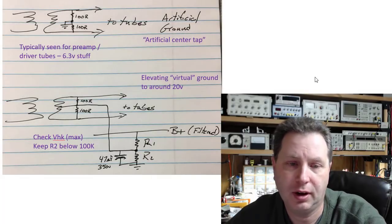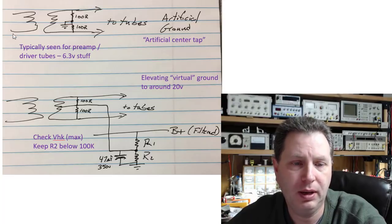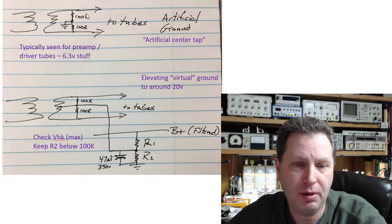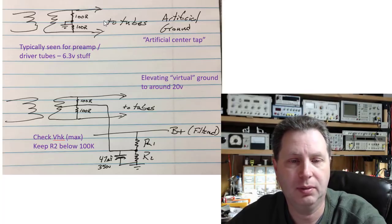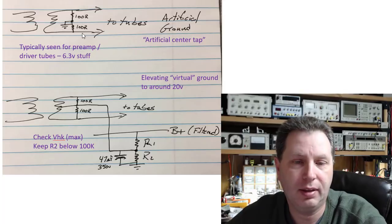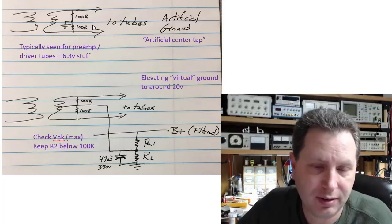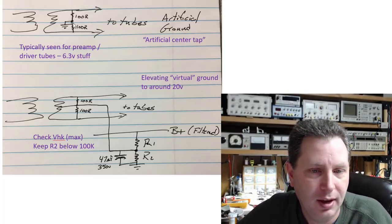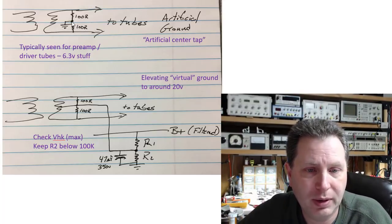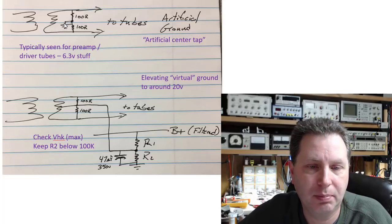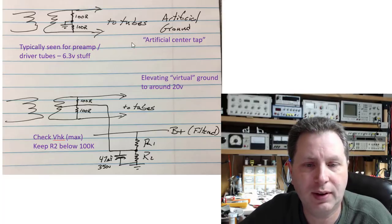So here's a couple other ways you can go about it. The first one would be: you would come off your secondary that would go to the tubes here, the 6.3-volt winding, and you would go from one leg of that to the other leg with two—I'll say 100k ohm resistors here; I've seen 56k ohm resistors used—and you find a point in between those two and you take that middle point to ground.